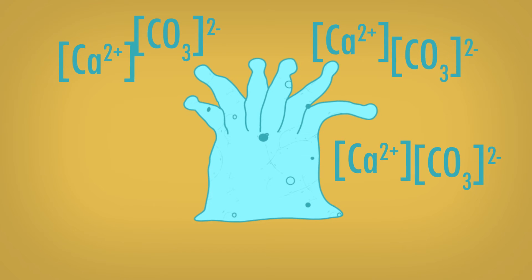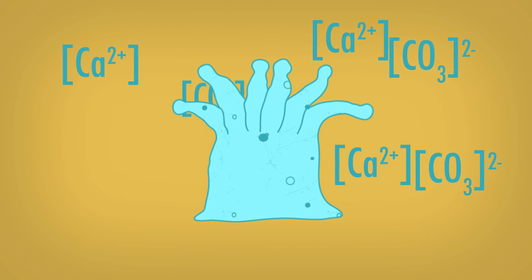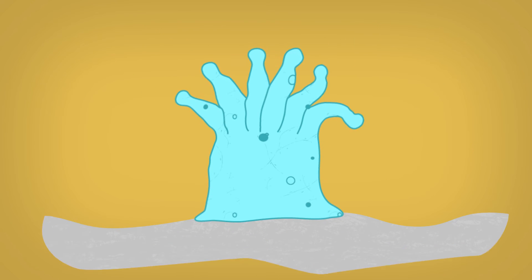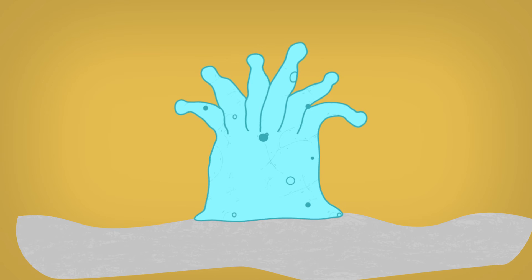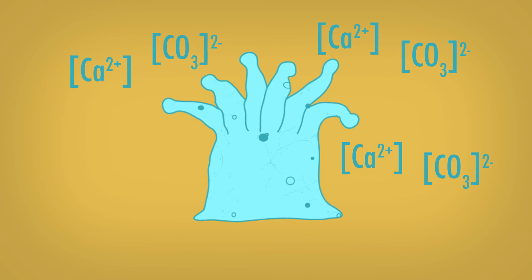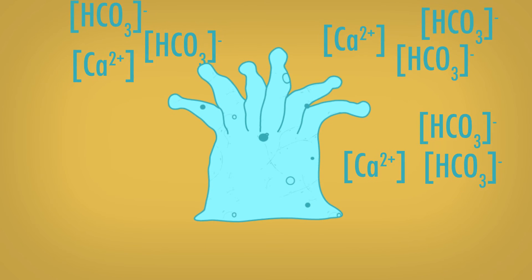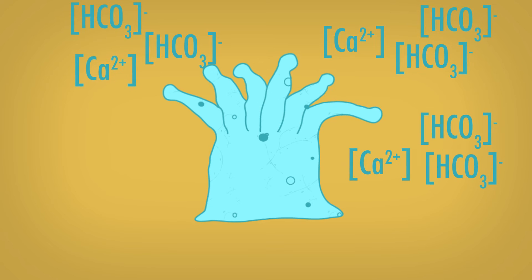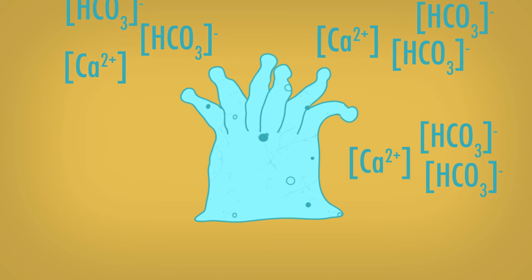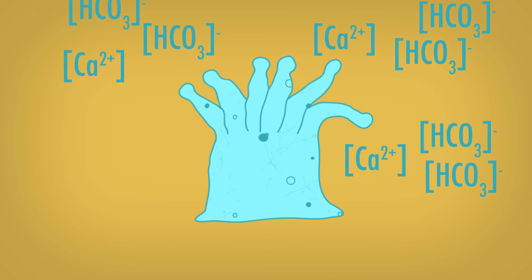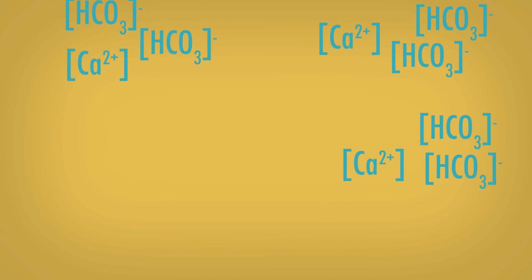But wait — who cares? As it often is in science, it's important to ask the question: who cares? Well, one answer to that question is coral. You'll remember from earlier that coral takes calcium carbonate from the water around it and builds a reef. But when the ocean becomes more acidic, coral is surrounded by calcium bicarbonate instead of calcium carbonate. Unfortunately, coral can't build its home with calcium bicarbonate, so the coral dies.